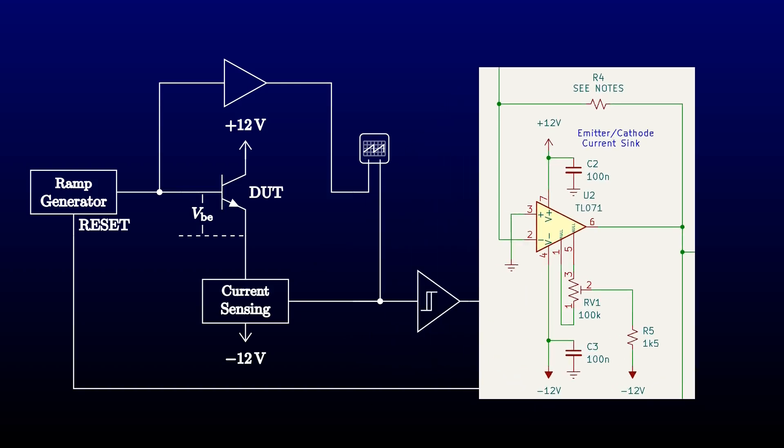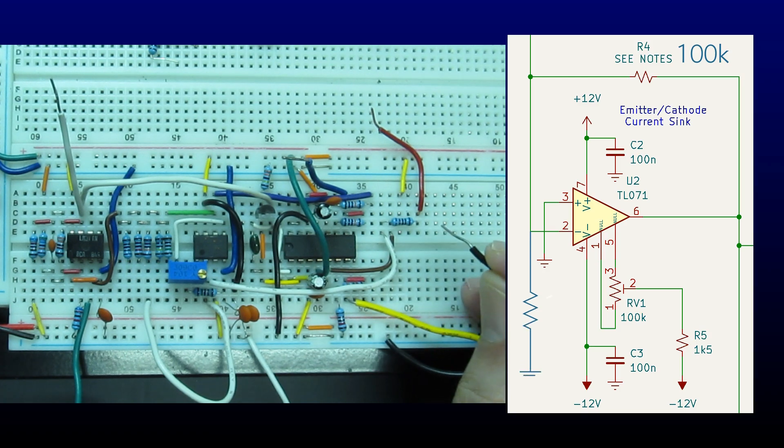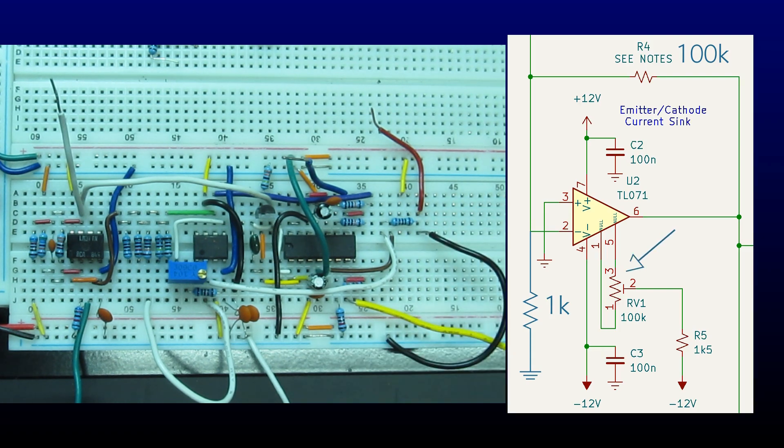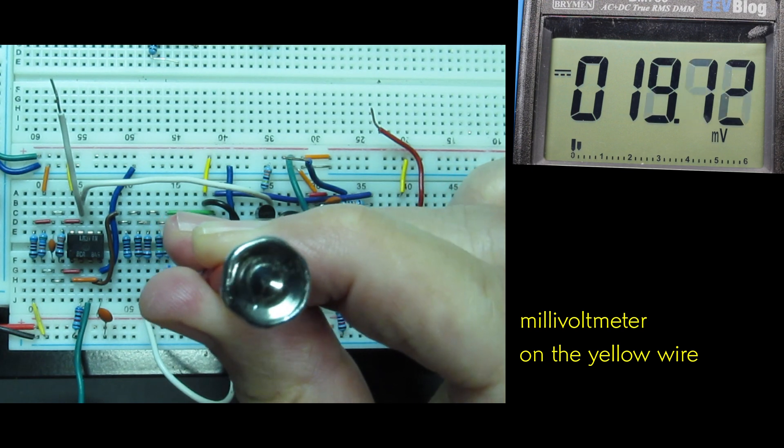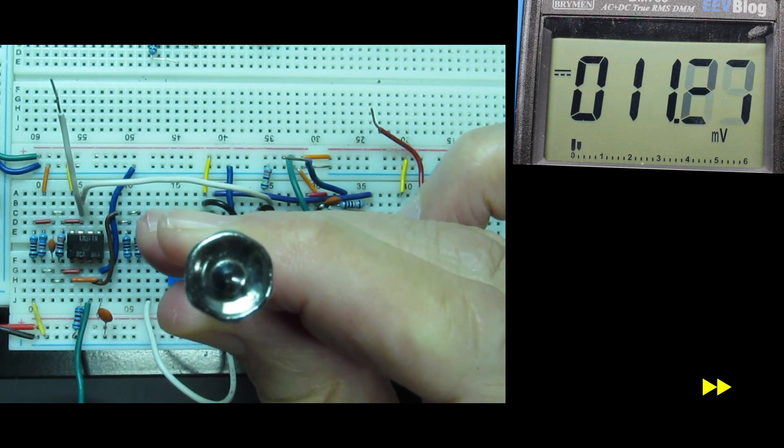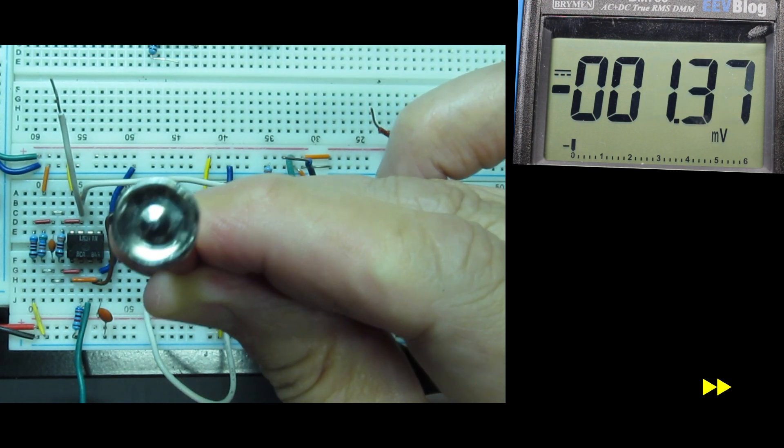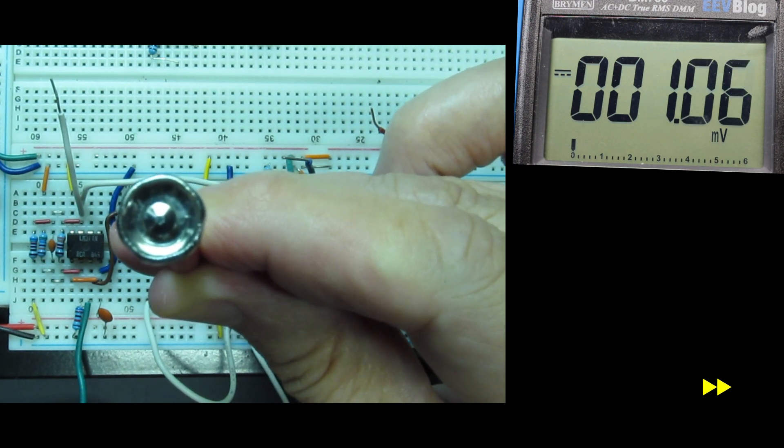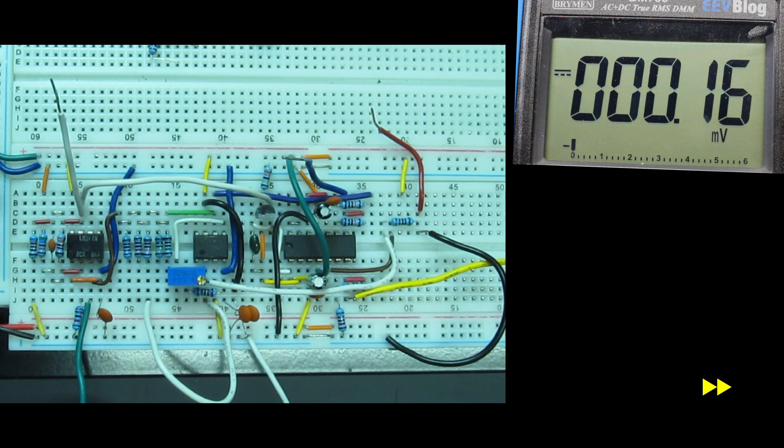Next, I want to adjust the current sense amplifier. I'll use the 100k feedback resistor. And I'll apply a zero current by tying the input to ground through a 1k resistor. I'll try to zero the output voltage by adjusting the trimmer. It's a really finicky adjustment even with a multi-turn pot. If I were redesigning this, I'd use a smaller pot with padding resistors on the two ends. But I should have to adjust this only once.